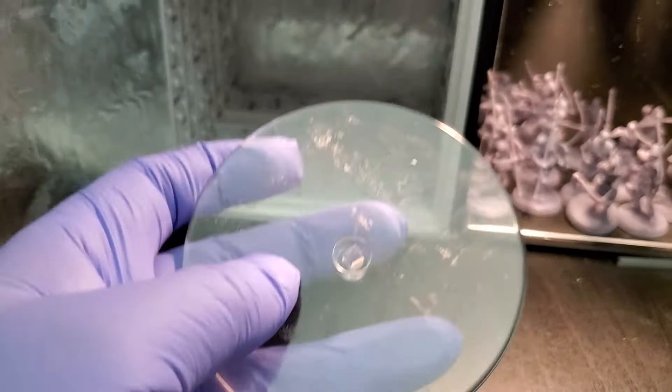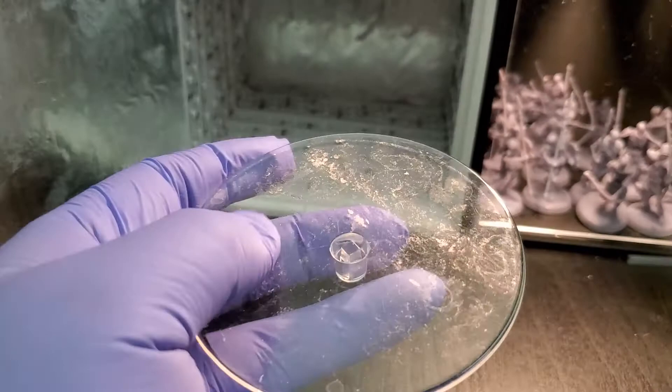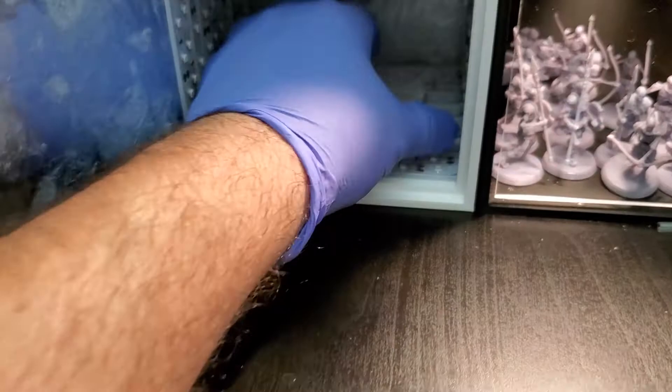It's because the resin on the minis actually gets stuck on the Plexiglas. I don't want that to happen to these LED strips. So I am going to probably cut a piece of Plexiglas somewhere and stick it on there, and that way I can just put my mini right on there.